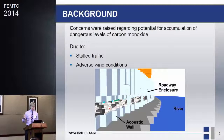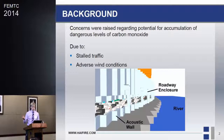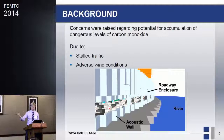Here's a picture of the FDS model. The concerns were raised during the design of this project — buildings will be covering over the roadway, and they were worried that during stalled conditions on the road there could be a significant buildup of carbon monoxide in the roadway, which could be dangerous for the drivers. Due to the river, there's significant wind influence, and we were wondering whether wind coming in from the river and creating a vortex around the opening could cause problems.